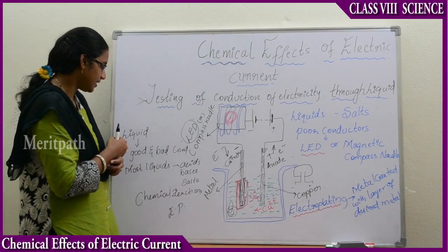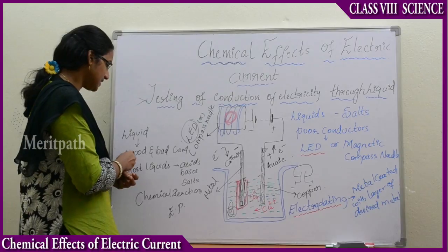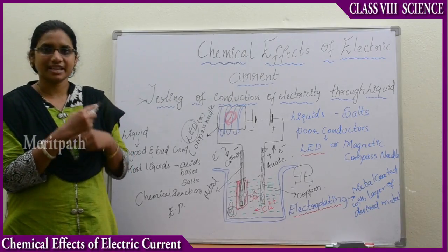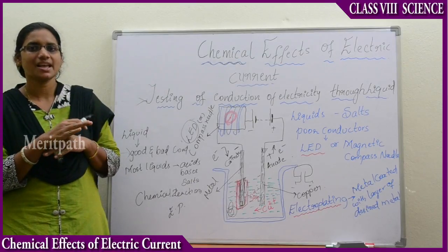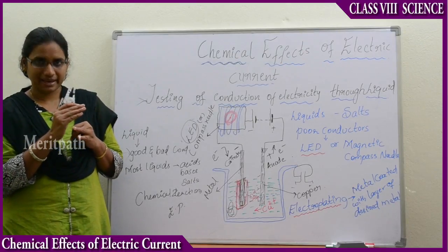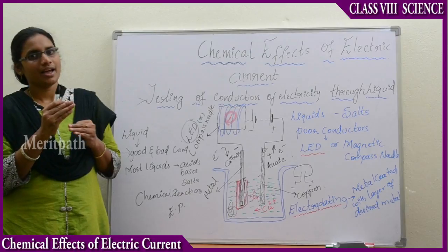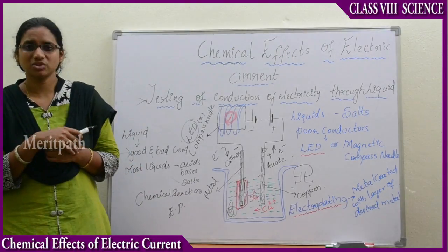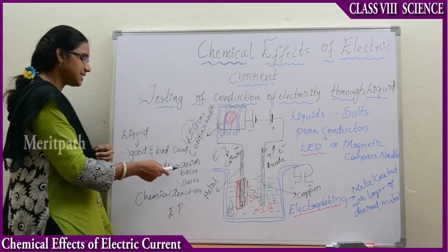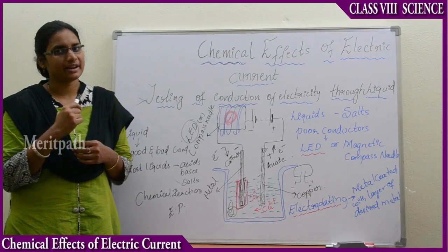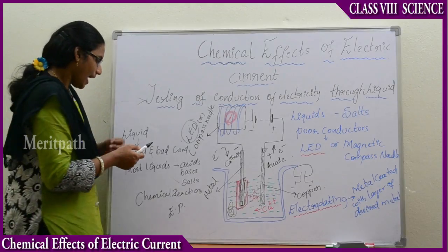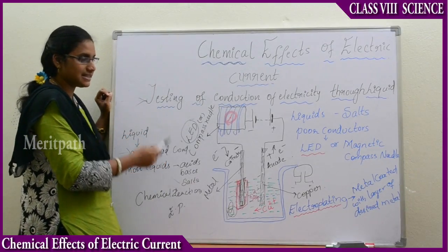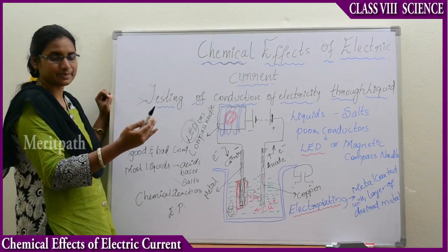The other point is that most liquids where chemical reactions take place are either acids, bases, or salts, which have the presence of ions. Now, these acids and bases can be tested with blue and red litmus paper. For acids, the blue litmus paper changes to red, and for bases, the red litmus paper changes to blue.